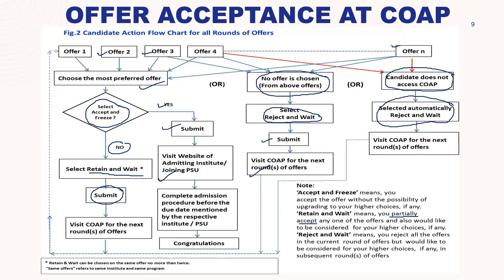So I have explained three things: accept and freeze, retain and wait, and reject and wait. Candidates should select reject and wait when they do not want to accept any of the allotted seats but wish to be considered for subsequent rounds. Now, the last thing is plain 'Reject.' There are five basic rounds of the COAP portal. In the last round, you cannot apply reject and wait or retain and wait — you can only either reject or freeze the offer. So in the final round, reject and wait becomes reject only.